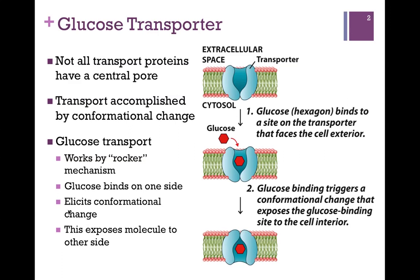What we're looking at in the glucose transporter is an example of another type of mechanism. In this case there's a conformational change, and it works by what's referred to as a rocker mechanism. So let's see how that works.